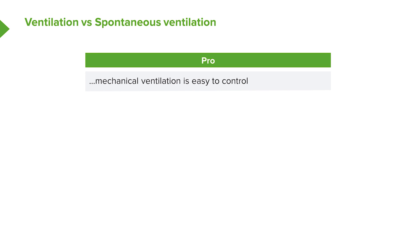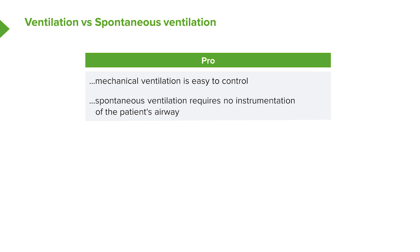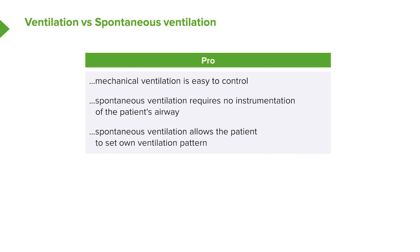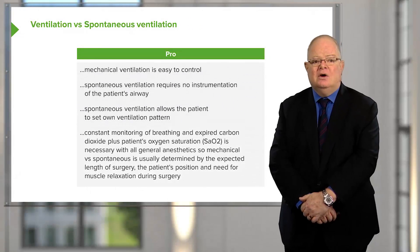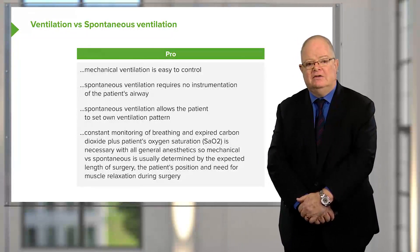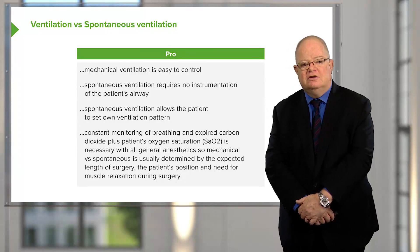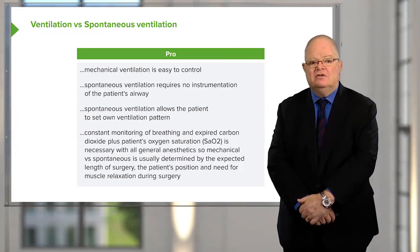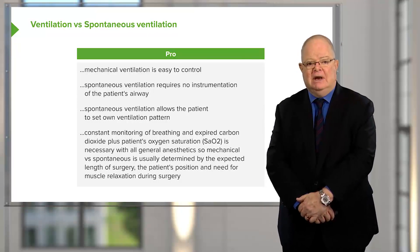Should we ventilate, or should we let the patient breathe spontaneously? The advantages of mechanical ventilation are that it's very easy to control minute ventilation — you just adjust the tidal volume or the rate. Spontaneous ventilation, on the other hand, requires no instrumentation of the patient's airway and allows the patient to set their own ventilatory pattern. Constant monitoring of breathing, expired carbon dioxide, and oxygen saturation is necessary with all general anesthesia. The choice is usually determined by the expected length of surgery, the patient's position, and the need for muscle relaxation.